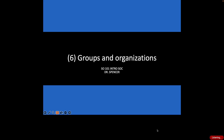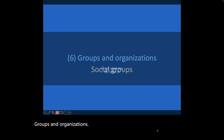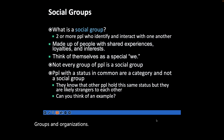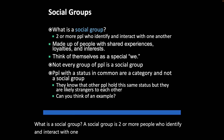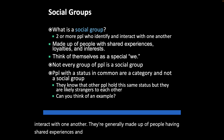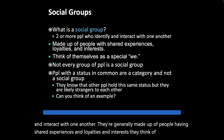What is a social group? A social group is two or more people who identify and interact with one another. They're generally made up of people having shared experiences, loyalties, and interests. They think of themselves as a 'we.'